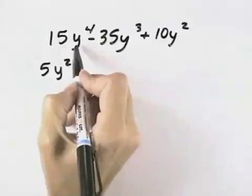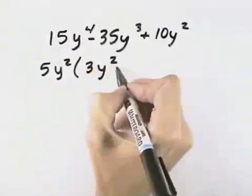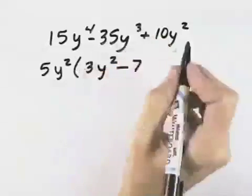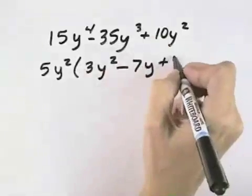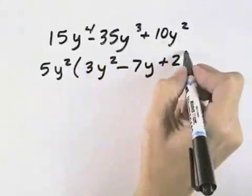If we divide the 5 and the y squared out of the first term, we're left with 3y squared. Then minus, 5 into 35 is 7 times, and taking the y squared out of the y cubed, dividing that out leaves y. And finally, 5 goes into 10 two times, and we've already divided out the y squared, so it's plus 2.